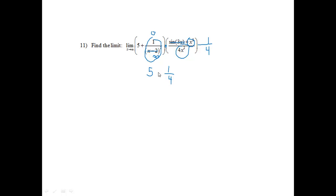And so then I will be multiplying those two together. So 5 times 1 fourth will give me 5 fourths.